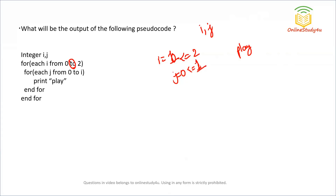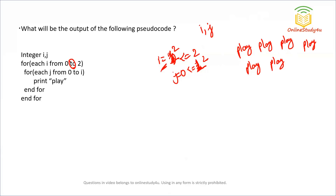When I is 1: J runs 0 and 1, so 'play' is printed twice. When I is 2: J runs 0, 1, and 2, so 'play' is printed three times. After this, I becomes 3 and the outer loop condition 3 ≤ 2 is false, so we exit. Total 'play' prints: 1 + 2 + 3 = 6 times.